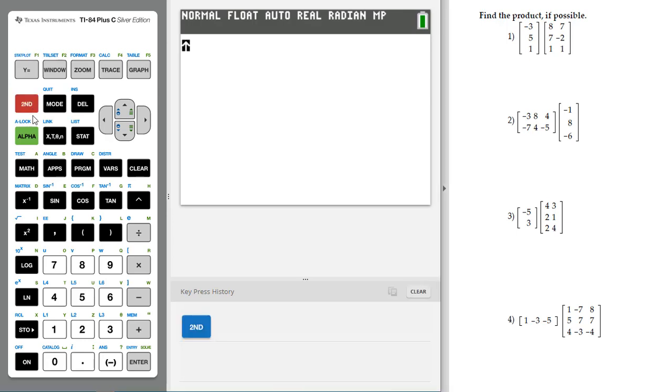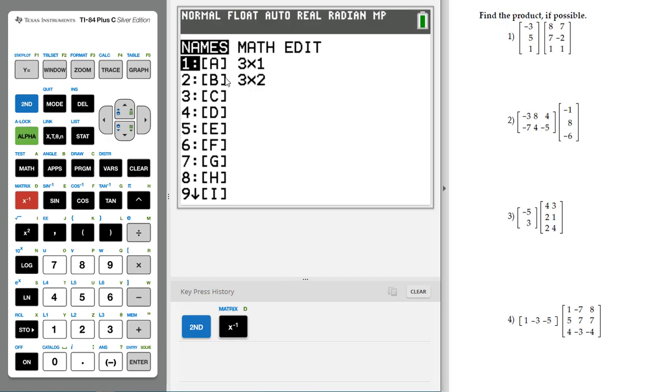So we're going to go to 2nd, Matrix. And you can see I've actually already put these in. But you can go over to Edit. So you scroll to the right, pick Edit, and I pick the first matrix A.